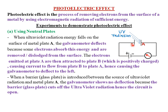When ultraviolet radiation of sufficient energy falls on the surface of negatively charged plate A, it causes photoelectric emission. The electrons within plate A absorb that ultraviolet radiation and move to the surface of plate A, ready to be ejected. Because plate B is positively charged and unlike charges attract each other, the photoelectrons moved to the surface of plate A are attracted by the positively charged plate B, which is connected to the positive terminal of the battery.